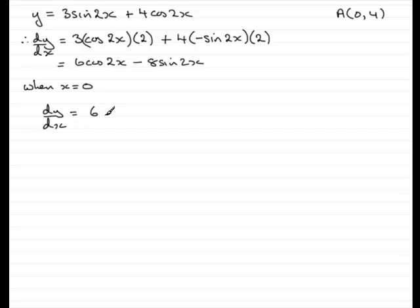We need the gradient of the normal, so therefore, gradient of normal at the point A is now going to equal negative the reciprocal of this. So that would be minus 1 sixth.